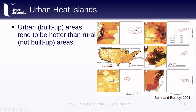In contrast, natural or vegetated surfaces tend to be better at regulating heat and keeping temperatures lower. The figure here comes from a 2021 paper by Benz and Burney, which looked at the variation in urban heat island effects in the United States. It shows the difference in daytime temperature during extreme heat events for urban census tracts versus rural census tracts in the same region. In general, the darkest areas, corresponding to the largest change in temperature, are located in built-up areas.